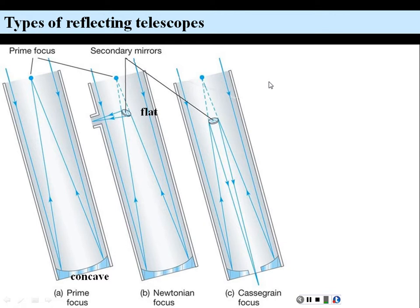We can improve this further by replacing the flat mirror with a convex mirror at the same point. As the light heads toward prime focus it hits the convex mirror and is directed to focus over a longer distance back through a hole drilled in the main mirror, to an eyepiece. This is called the Cassegrain focus, and it's one of the most common and reliable reflector telescope designs.